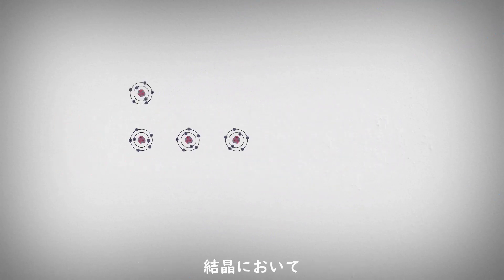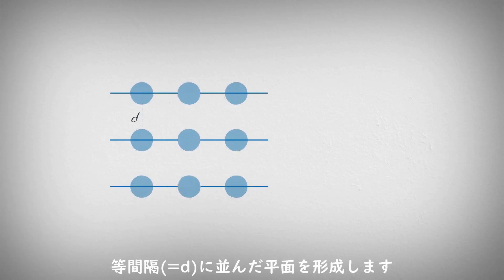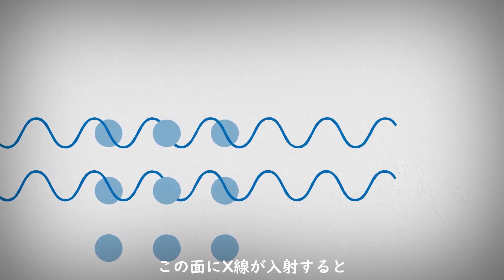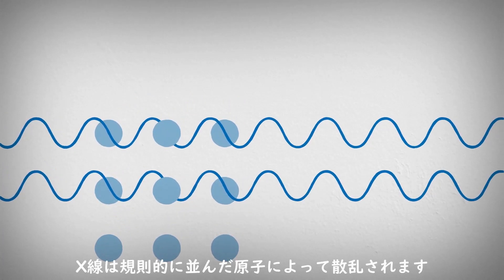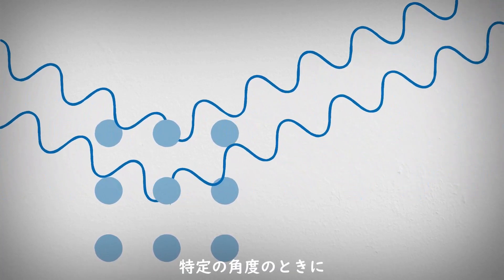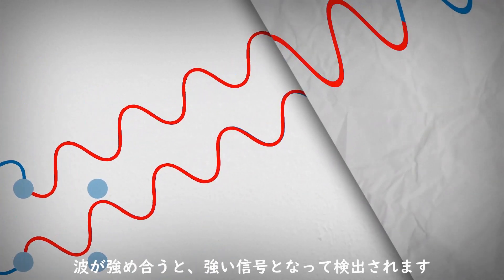In a crystal, the repeating arrangement of atoms form distinct planes separated by well-defined distances. When the atomic planes are exposed to an X-ray beam, X-rays are scattered by the regularly spaced atoms. Strong amplification of the emitted signal occurs at very specific angles, where the scattered waves constructively interfere. This effect is called diffraction.